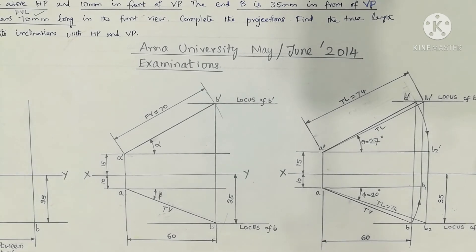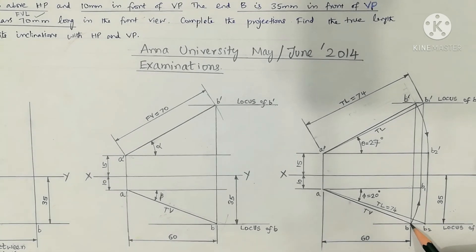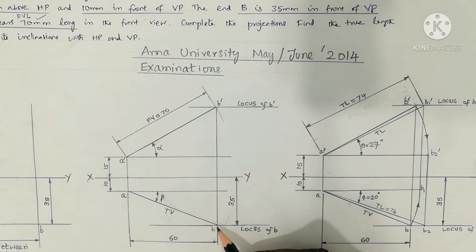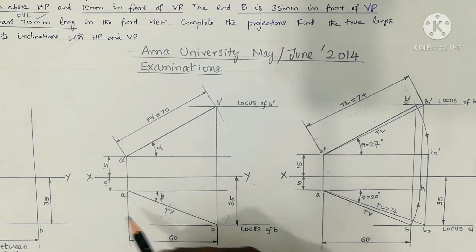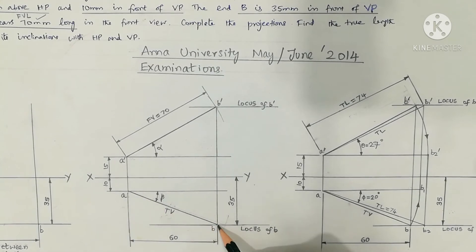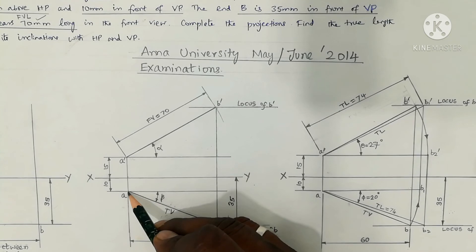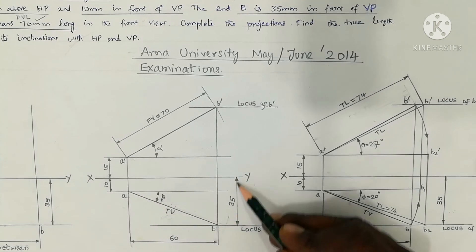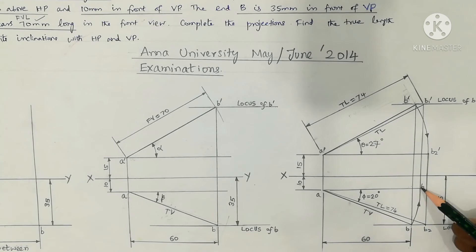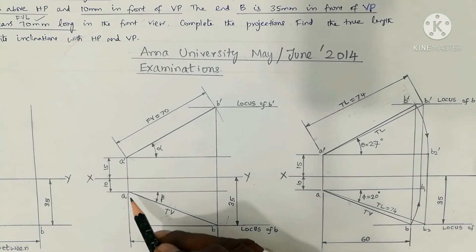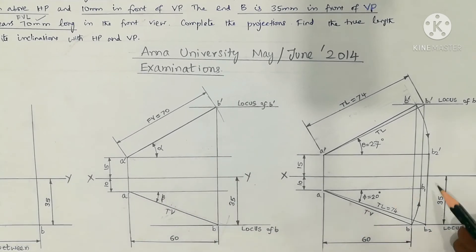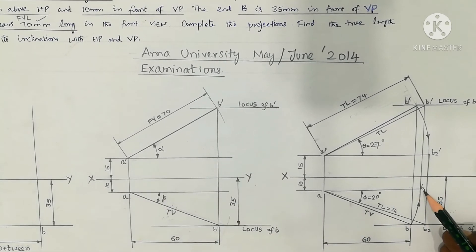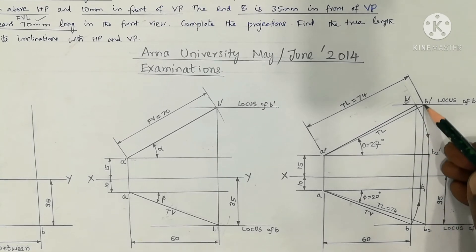To complete the projections for the top view, keep A as the center and AB as the radius. Draw an arc upward to meet the horizontal line passing through A. Mark the intersection point as B1.